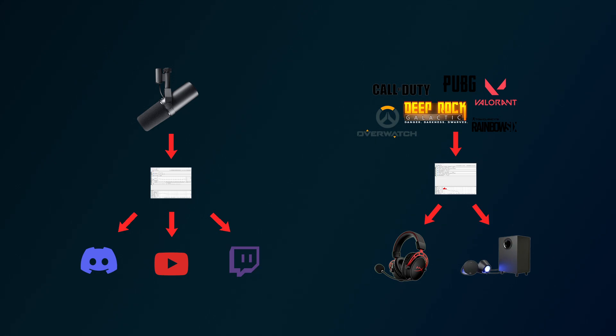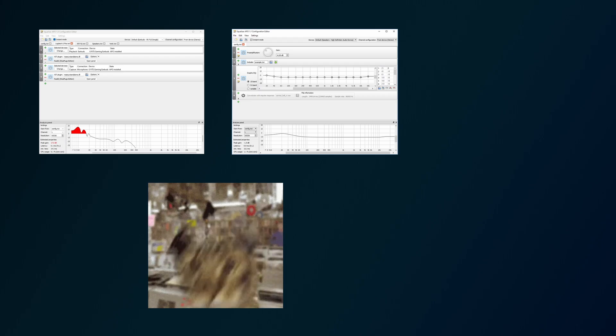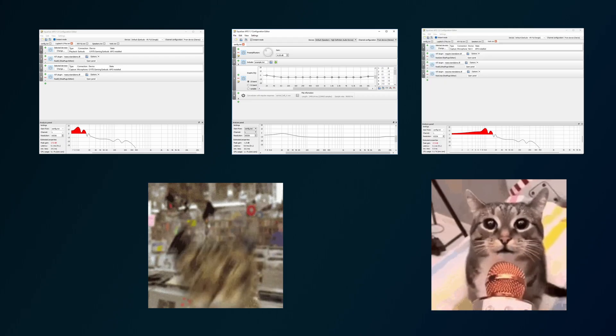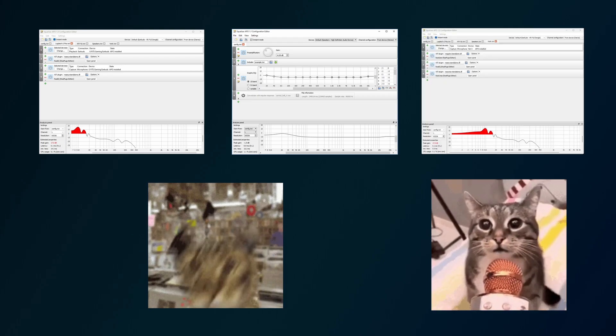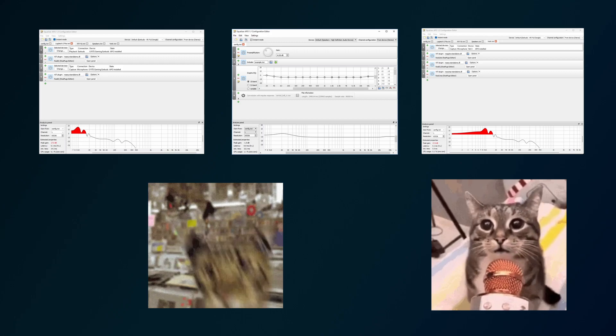You can set different EQ settings for each and every device you have on your system. It can be really helpful to have a set of EQ settings dedicated to gaming on your headset, with another set for general purpose use on your speakers, and another set of EQ settings for your microphone.